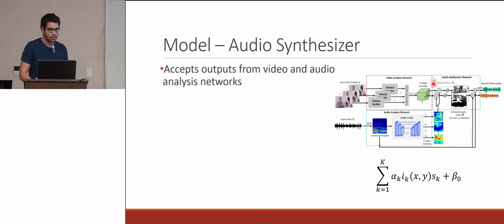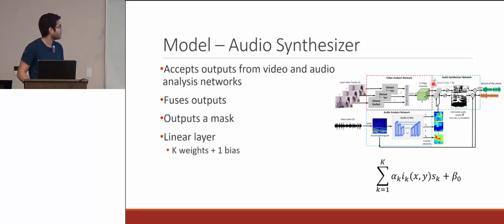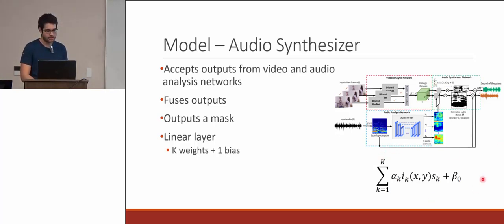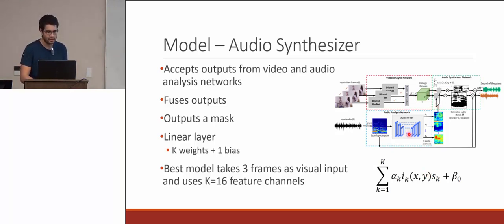The audio synthesizer network accepts outputs from the video and audio analysis networks, fuses them, and outputs the same number of masks as there are audio sources. What was unique was its simplicity — the only parameters were K number of weights and one bias, applied as weights against the image features multiplied by the sound features, plus the bias. Their best model takes three frames as visual input with K equals 16 feature channels for both networks.